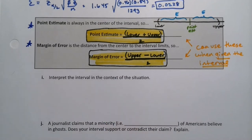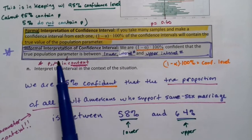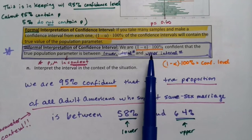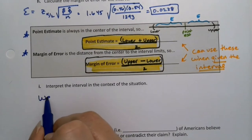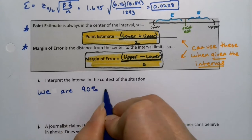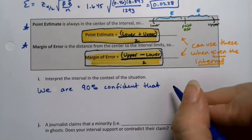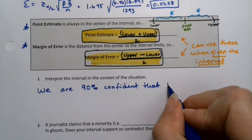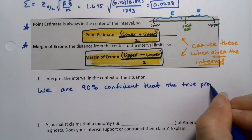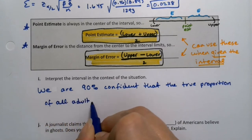So now interpret that interval in the context of the situation. That's the script we learned a couple pages ago — there's an informal interpretation for confidence intervals. The script is: we are blank percent confident that the true proportion parameter is between such-and-such and such-and-such. So we are 90% confident — because this one was a 90% confidence level — that the true population proportion, which is the true proportion of all adult Americans that believe in ghosts...